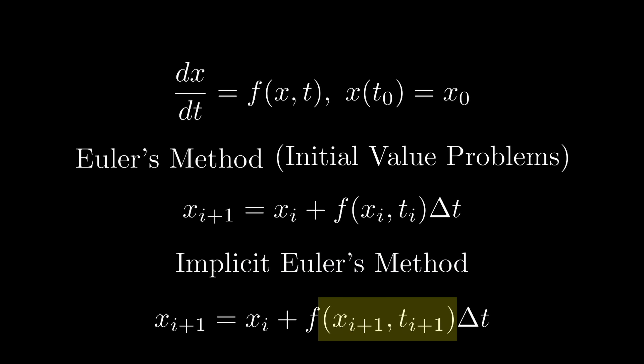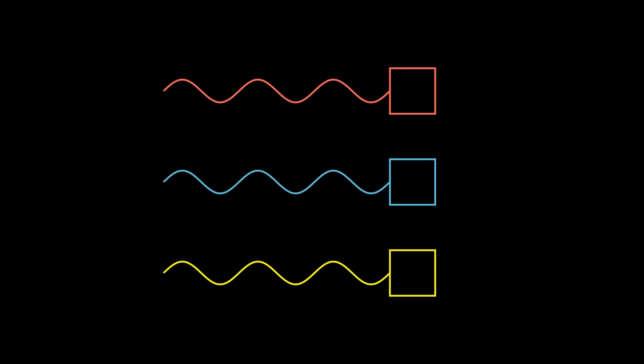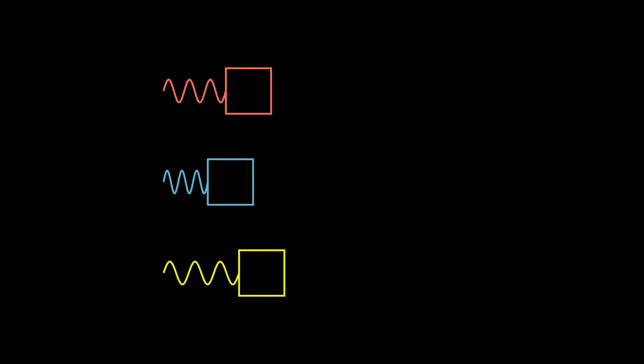By doing this, we might be able to mitigate the previous issues since we take into account the next position in our calculation. Note that this numerical method will be somewhat more numerically stable. We call this method implicit, as x_{i+1} depends on itself. Here, the Euler's method we introduced before could then be thought of as an explicit method.